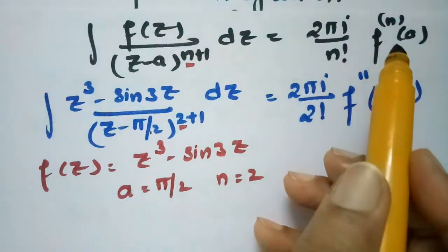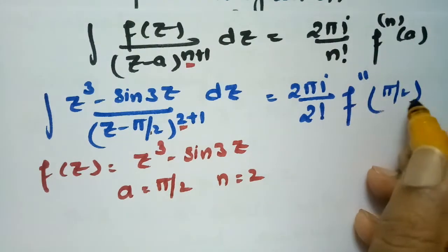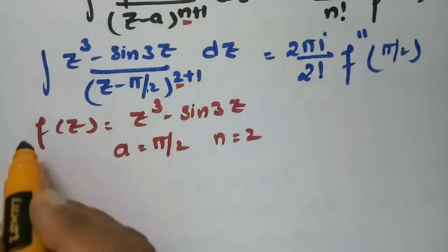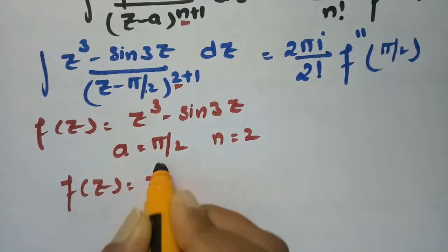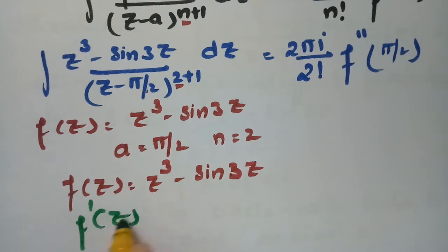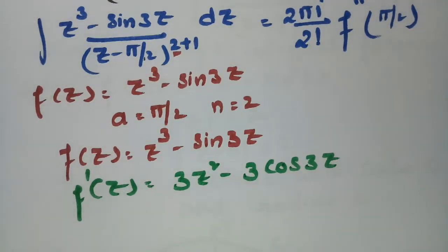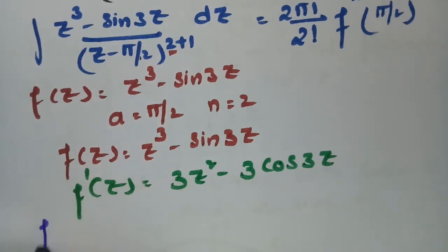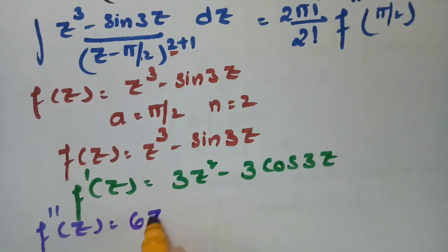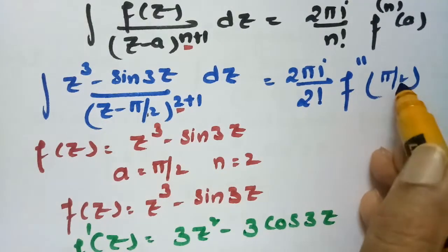According to Cauchy's formula the integral equals (2πi / 2!) · f''(π/2). We have f(z) = z³ − sin3z. The first derivative is f'(z) = 3z² − 3cos3z. The second derivative is f''(z) = 6z + 9sin3z.